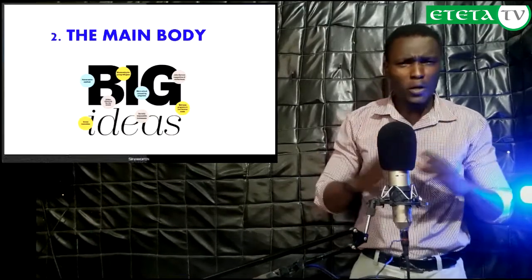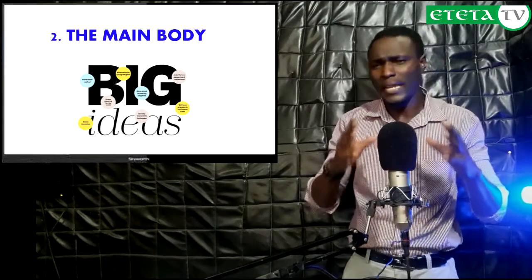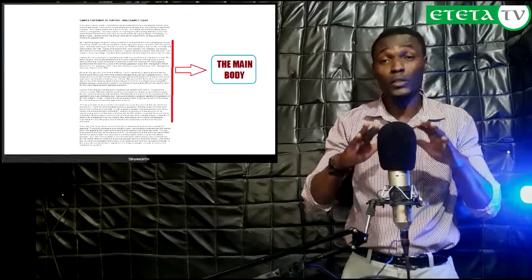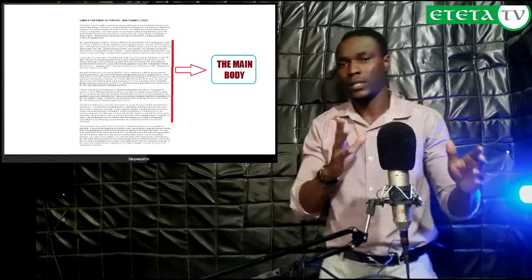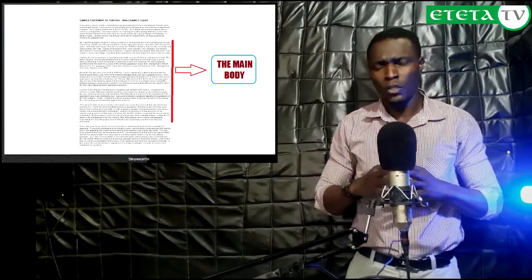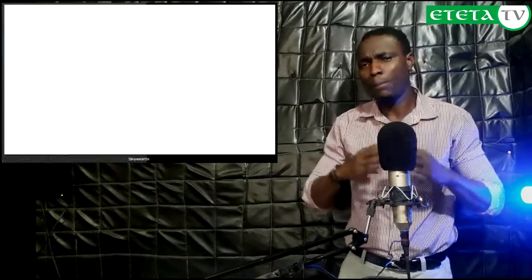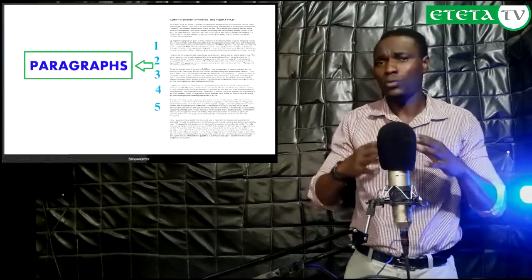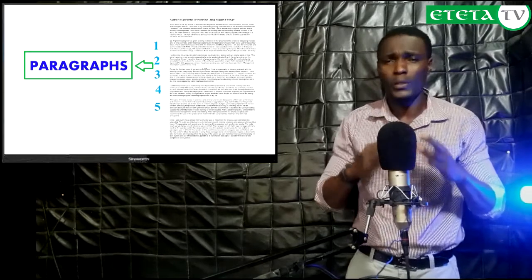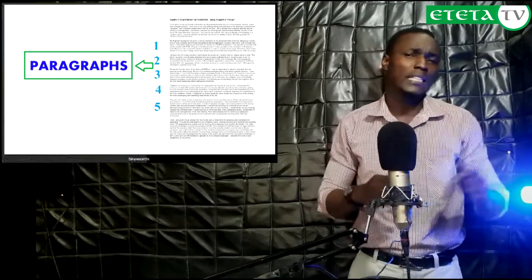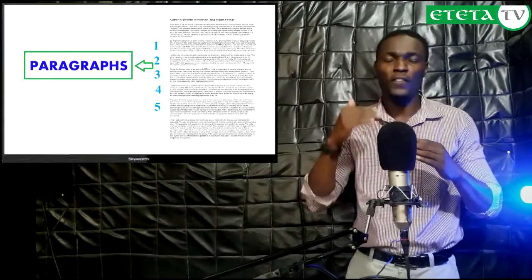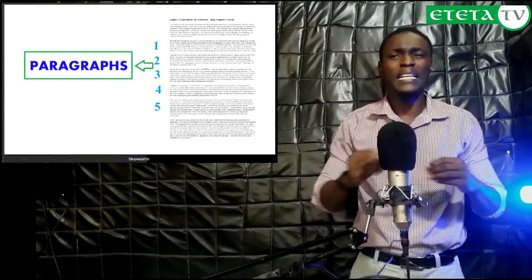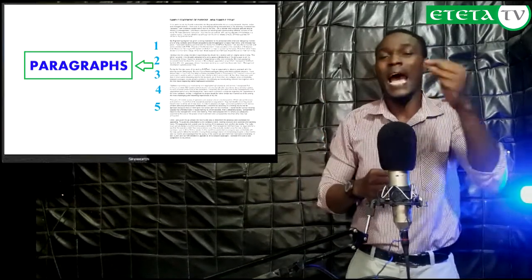The other part of an essay is the main body. The main body basically supports the main ideas of the thesis statement — this is where you lay out your arguments. When writing the main body, you will come up with different paragraphs for every idea. Every idea has to come with a new paragraph. Examples can fit into any paragraph, but when you have a new idea, a new paragraph begins.